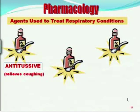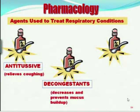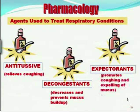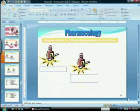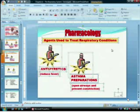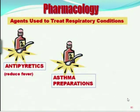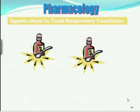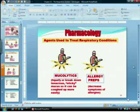Some other pharmacology terms: an antitussive — tussis means cough, so antitussive helps with coughing. A decongestant would decrease the congestion and mucus buildup. An expectorant helps someone cough up that mucus. Antipyretics are for fever. Asthma preparations are for asthma. Mucolytics — lytic or lysis means destruction, so this is for breaking down the mucus, which someone with allergies might need.